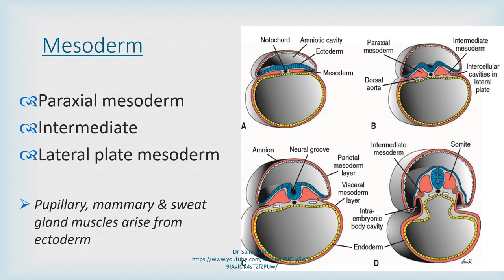Mesoderm is further divided into three components: paraxial mesoderm, intermediate mesoderm, and lateral plate mesoderm. The paraxial mesoderm is present just beside the midline. As you can see in diagram A, just beside the notochord on both sides, the orange-colored mesoderm is labeled as paraxial mesoderm. Just beside that, highlighted in green, is the intermediate mesoderm, and the most lateral portion, highlighted in orange, is known as the lateral plate mesoderm.